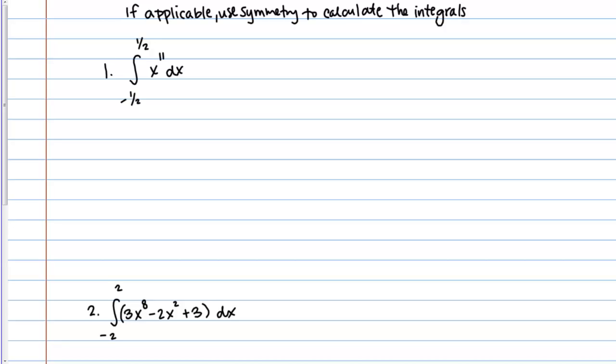We just learned that knowing if a function is even or odd can help us simplify taking certain definite integrals. Specifically, if we're taking a definite integral from negative A to A and the function is even or odd, then we can simplify the process a bit. Let's go through a few examples of that.